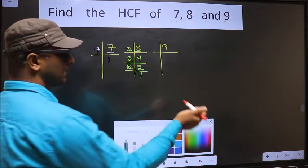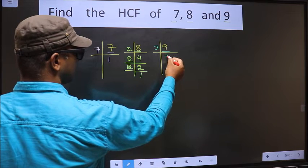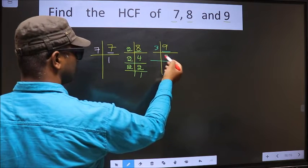Now the other number is 9. 9 is 3 times 3. We have 3. 3 is a prime number.